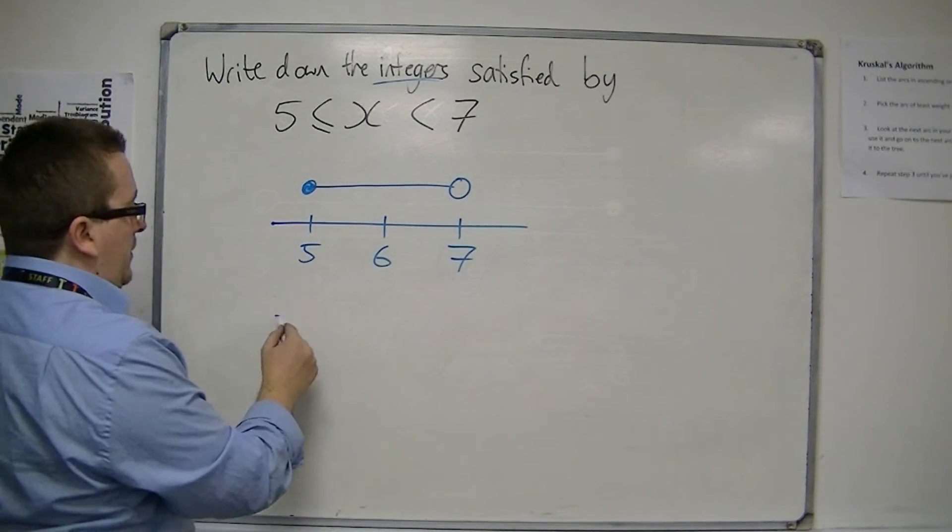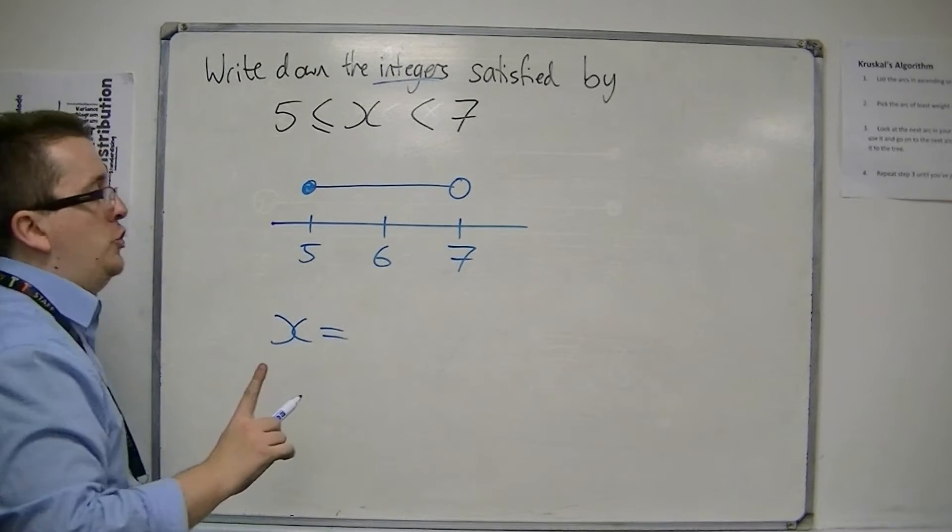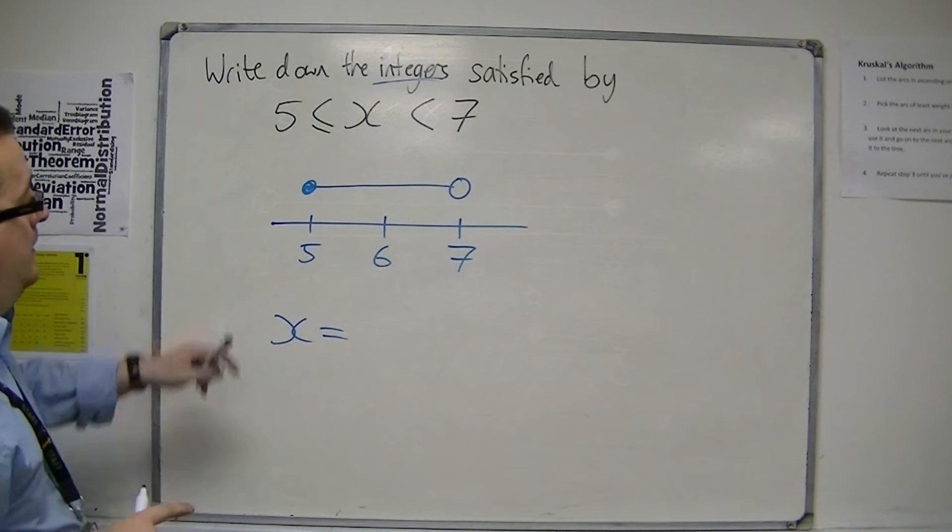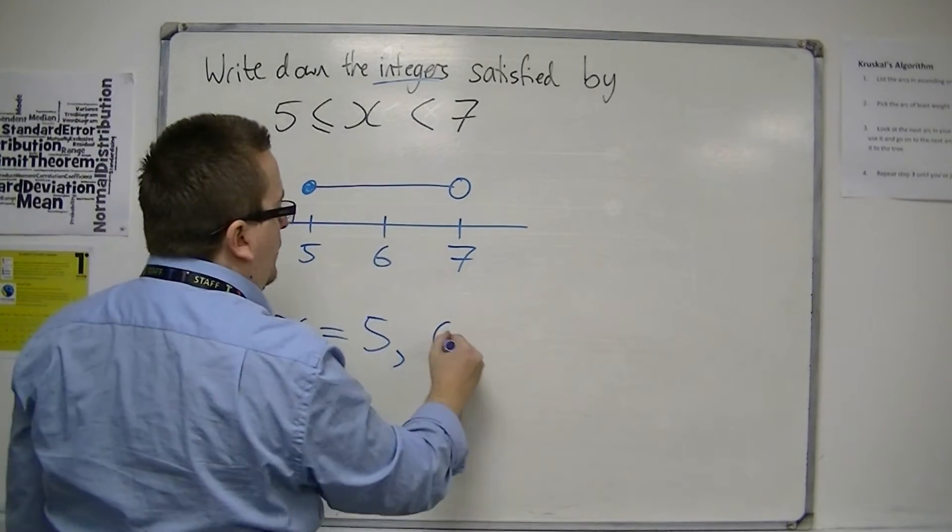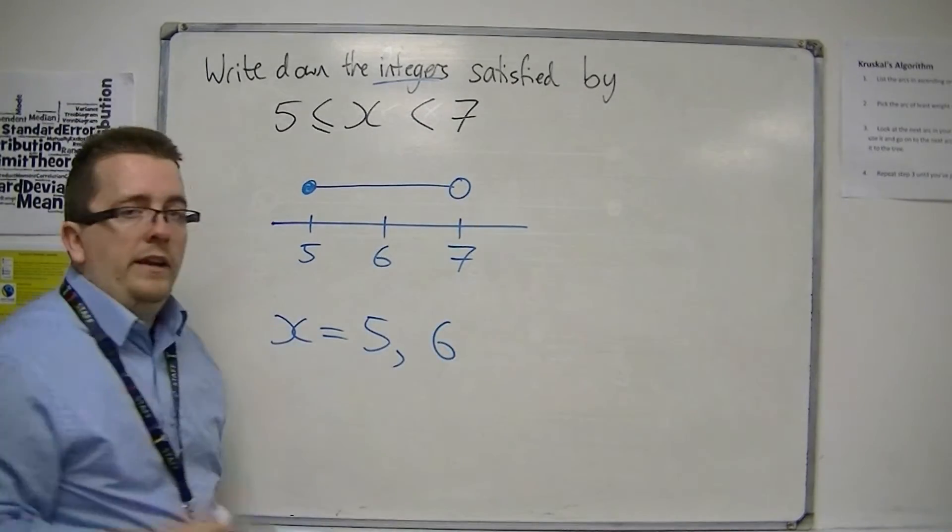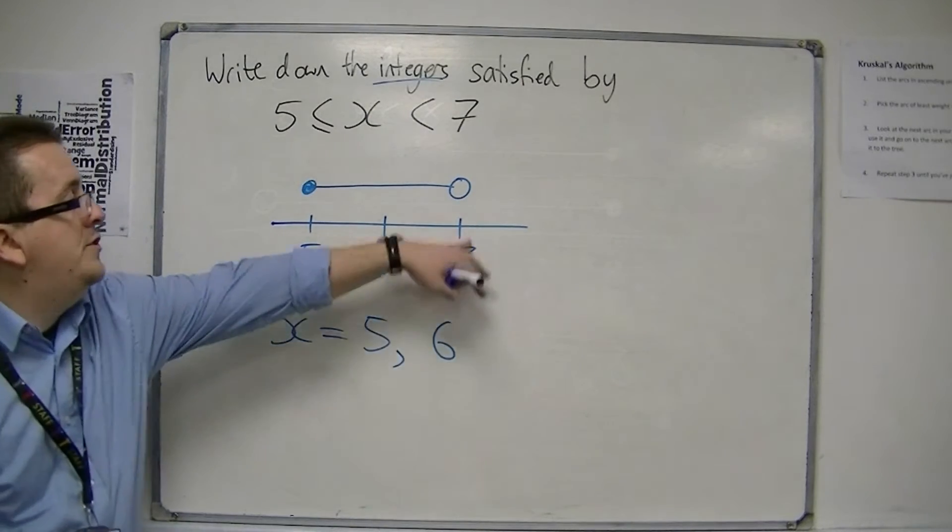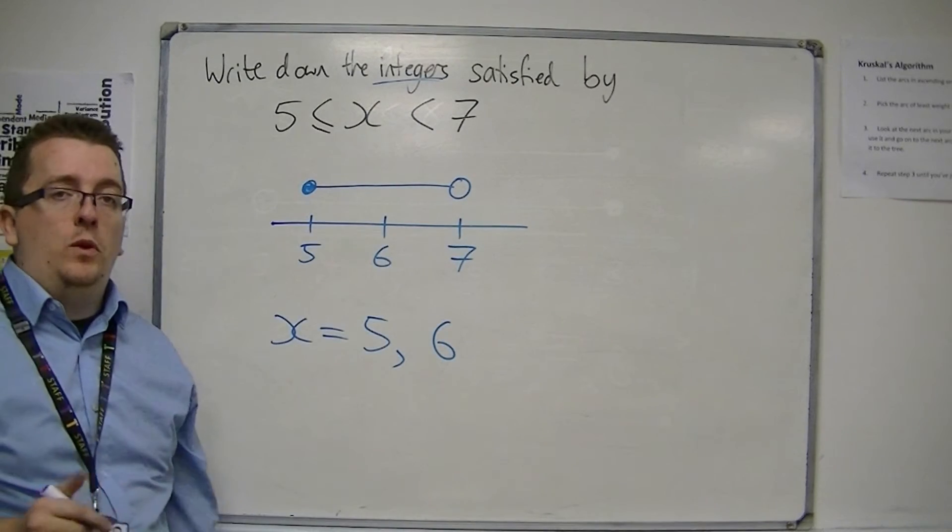so the x can take the integers that are represented there, so 5 is allowed, because that's got a solid dot, 6 is allowed, because it's in the region, but 7 is not allowed. 7 is not an integer satisfied by that inequality.